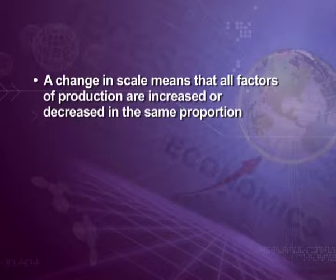Therefore, the firm can change its scale of operations. A change in scale means that all factors of production are increased or decreased in the same proportion. Change in scale is different from changes in factor proportions. When a firm increases all inputs proportionately and simultaneously, there are three possibilities: first, total output increases more than proportionately; second, total output increases proportionately; and third, total output increases less than proportionately.